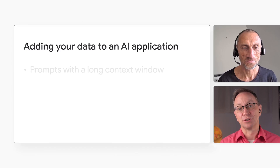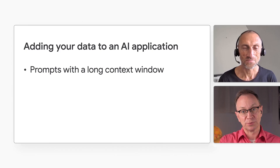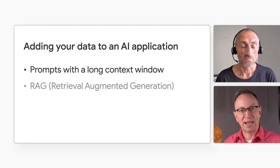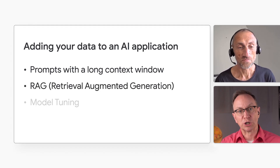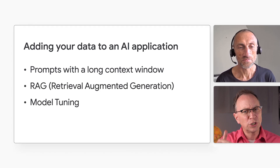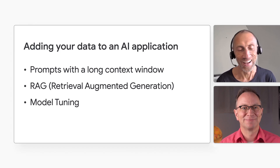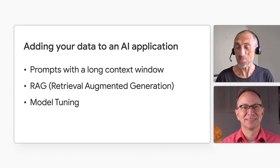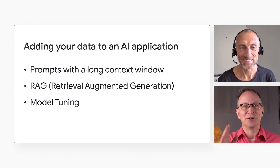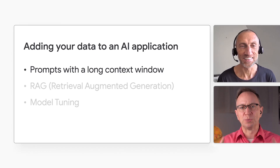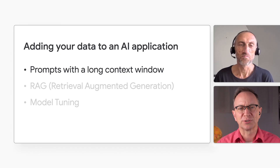I've heard that you can use prompts with long context windows, RAG, and model tuning in AI applications. Which one should I use when? Let's talk about each of those. Sounds good. Let's start with prompts with long context windows.